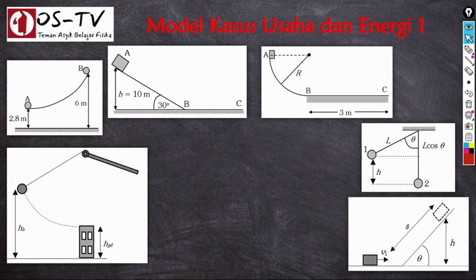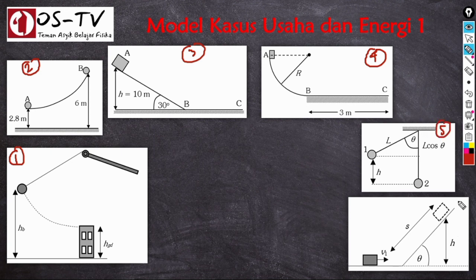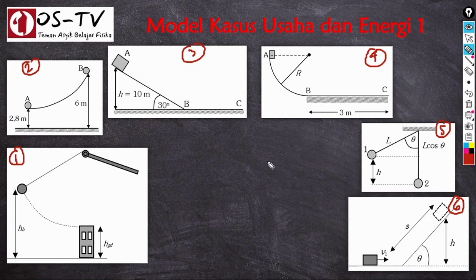Di sini ditampilkan gambaran kasus-kasus usaha dan energi yang sering keluar pada soal UTBK atau SBMPTN. Ada enam model kasus yang digambarkan. Dari keenam kasus ini, sebagian besar menyebutkan bahwa benda bergerak dari posisi yang lebih tinggi ke posisi yang lebih rendah, kecuali pada kasus enam, di mana benda bergerak dari posisi yang lebih rendah ke posisi yang lebih tinggi. Biasanya kasus-kasus ini menanyakan besar kecepatan benda pada posisi tertentu.